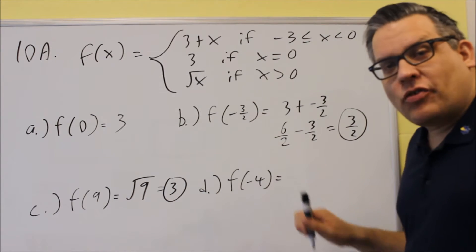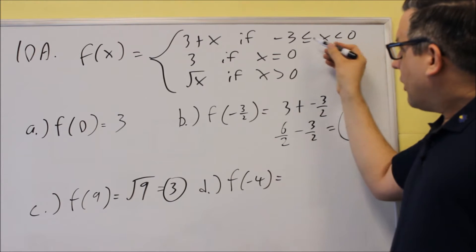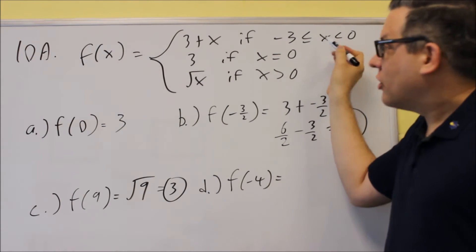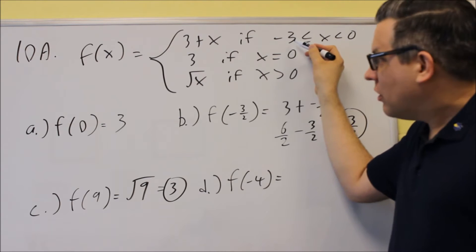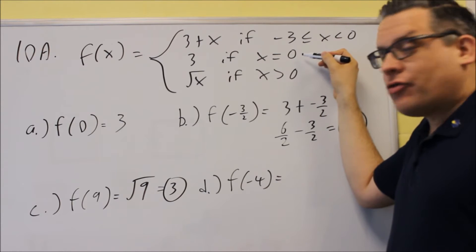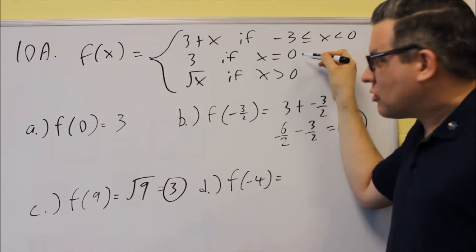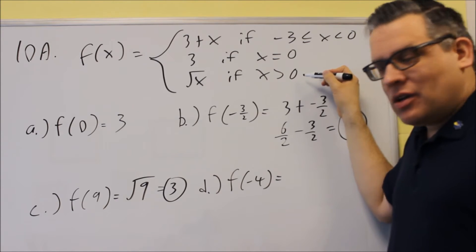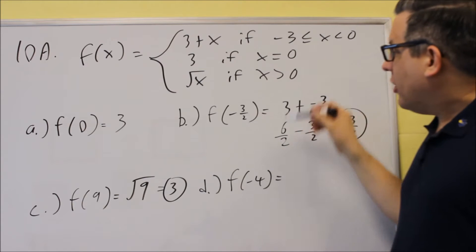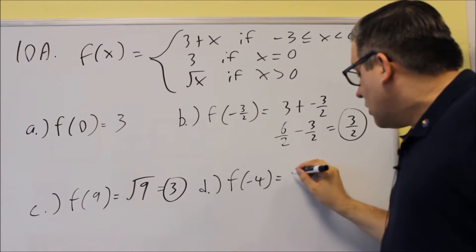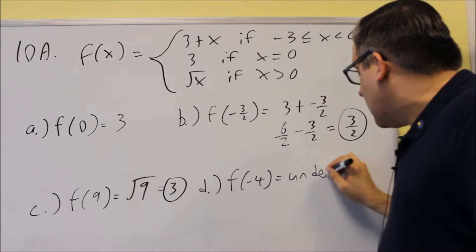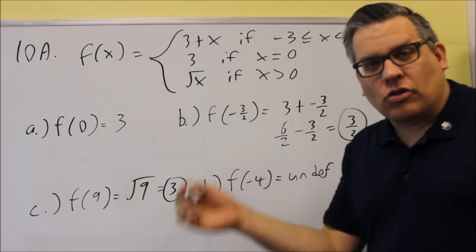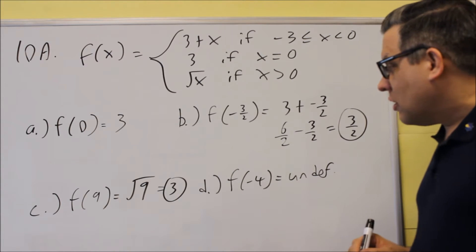And then D, we have f of negative 4. Okay, so negative 4 does not fit with the top equation because it only goes up to negative 3. Negative 4 is not equal to 0, so we can't use this one. And negative 4 is not greater than 0, so we can't use this one either. So this is a case where that number doesn't work with any of these. So for this, you would say undefined or no solution, something like that, you would have.